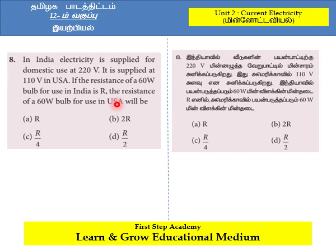The given options are: option A — R, option B — 2R, option C — R by 4, option D — R by 2.